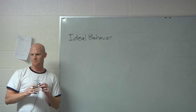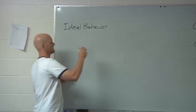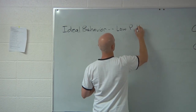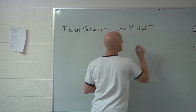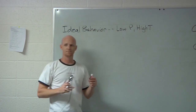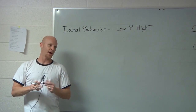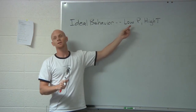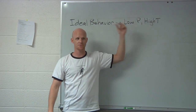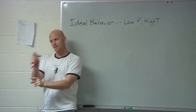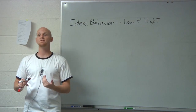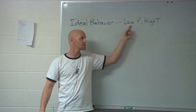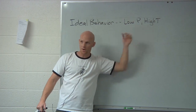Ideal behavior is more likely at low pressure and high temperature. If given a gas and asked under which conditions it most likely displays ideal behavior, look for the lowest pressure and highest temperature combination. Or if asked which condition causes the most deviation from ideal behavior, pick the highest pressure and lowest temperature.